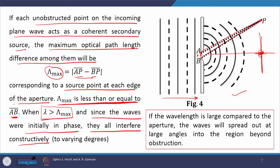If the wavelength is large compared to the aperture, the waves will spread out at large angles into the region beyond the obstruction. You will have maxima at the center and intensity will slowly decay down as you move away from the axis of symmetry. If at that point we could sufficiently reduce the wavelength of the incoming radiation, the pattern would revert back to the Fresnel case.